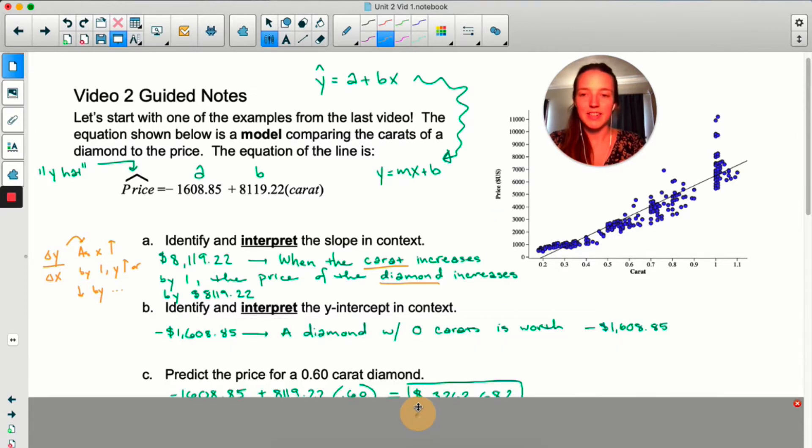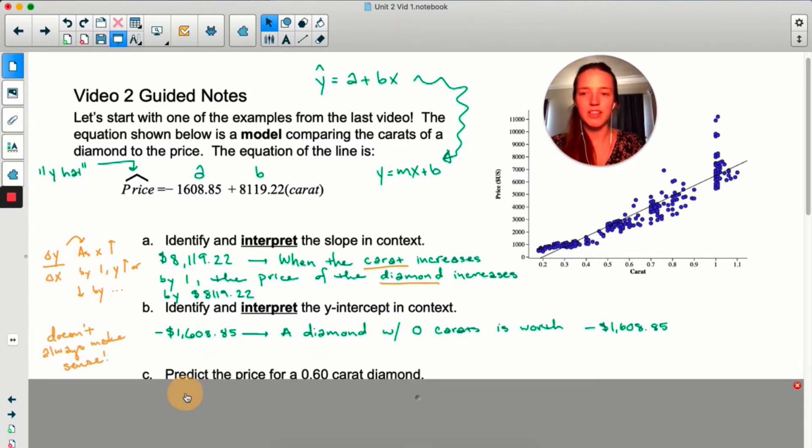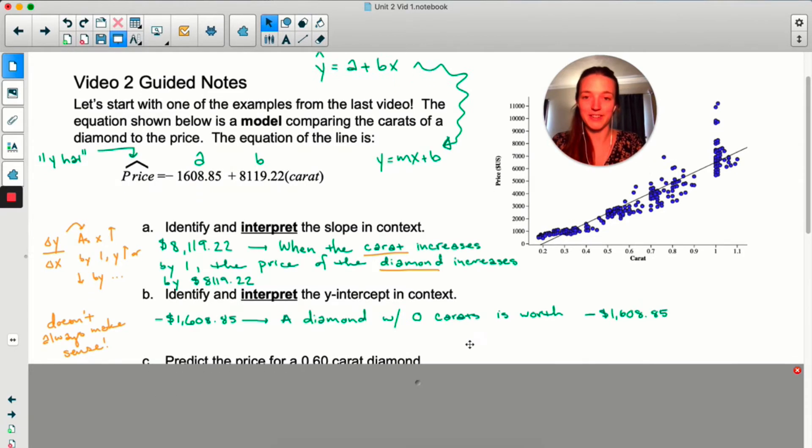Now y-intercept is kind of silly. A diamond with zero carats is worth negative $1,608. Yeah, you'll actually be paid to take a zero carat diamond, I guess. The y-intercept doesn't always make sense. It still is the y-intercept, it just doesn't make practical sense. And very often that is the case.